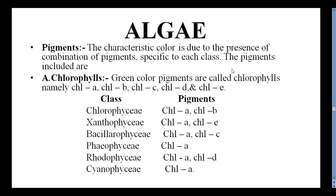Coming to pigments — the characteristic color is due to a combination of pigments specific to each class. First, Chlorophylls are responsible for green color, including Chlorophyll A, B, C, D, and E. Chlorophyll A is present in all classes. Chlorophyceae has Chlorophyll B along with A. Xanthophyceae has Chlorophyll E along with A. Bacillariophyceae has Chlorophyll C along with A. Phaeophyceae has only Chlorophyll A, and Rhodophyceae has Chlorophyll D along with A.